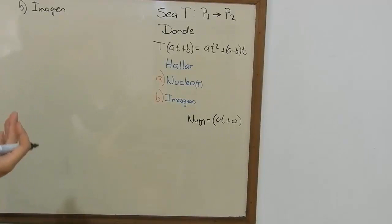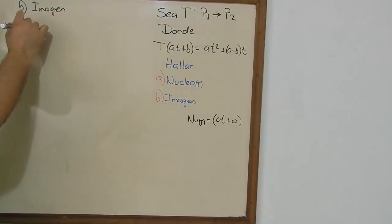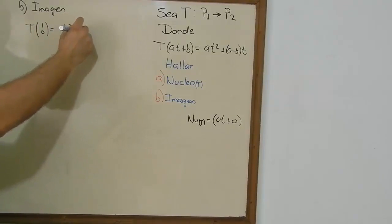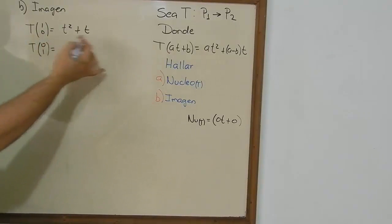So now we're going to find the image or the range. And for that, we're going to use the canonical base and we're going to just substitute on the equation. So that means the transformation of the vector (1, 0) is equal to t² plus t, of course. You replace A for 1 and B for 0.